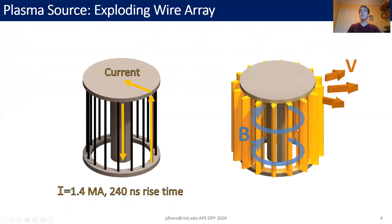At the same time there's a very large magnetic field generated around the central cathode, and this magnetic field interacts with the current in the wires to produce a radial J cross B force which accelerates the plasma outwards. As the plasma is accelerated outwards it drags with it a fraction of that driving magnetic field, and so the exploding wire array is a source of diverging azimuthally magnetized plasma, continually ablated from the wires for the 500 nanosecond drive time of the Magpie facility.